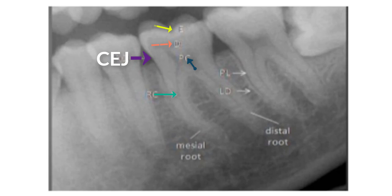We can't really distinguish on a radiograph the difference between the dentin and the cementum because they are similar in radiopacity and the cementum is a thinner layer around the root structure. Right where the enamel and the cementum meet is where we call the CEJ. Then we have the periodontal ligament space — that's a dark line surrounding the root structure. Because the periodontal ligaments are tissue, we can't see them on the x-ray; we can only see the space in which they are housed. The lamina dura is the dense cortical bone that surrounds the periodontal ligament space.